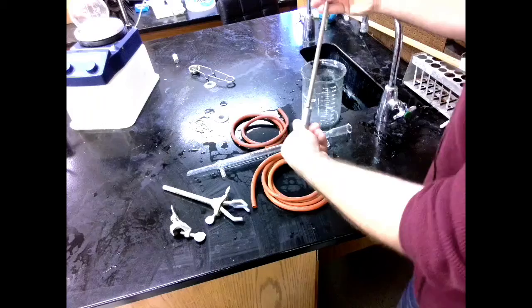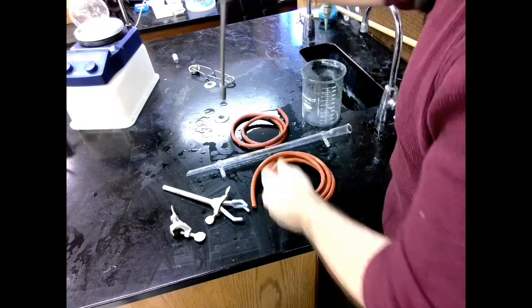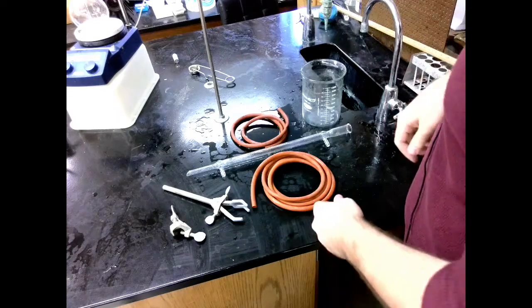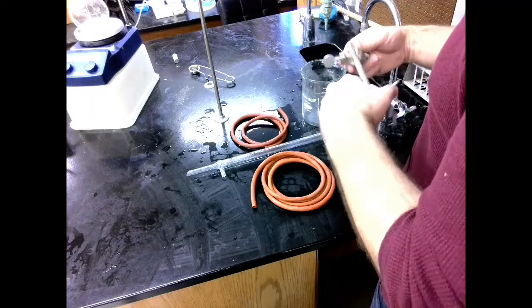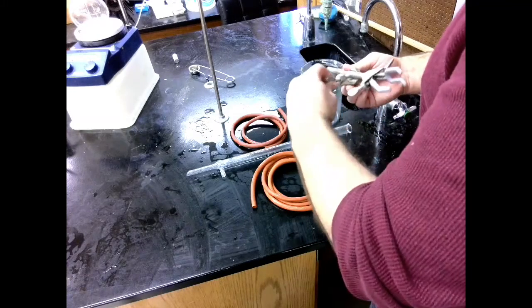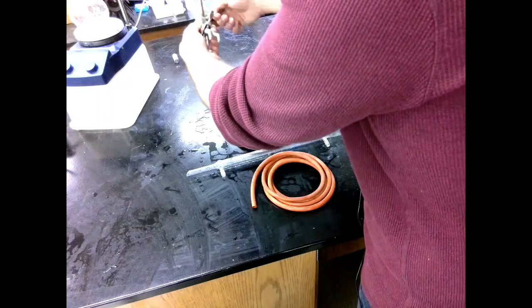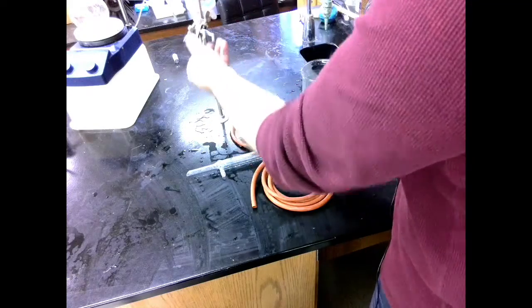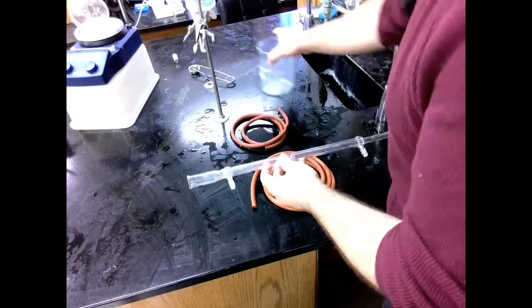And we will need an extra ring stand. So this is of the type that will just fit into our table here. The clamp will be the only thing holding the condenser up. The condenser itself will need some adjusting as you put it together. So for now we're just going to set it up at a diagonal angle. Let's move our beaker out of the way.